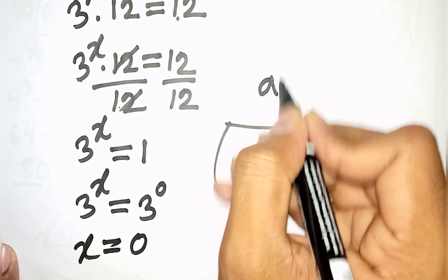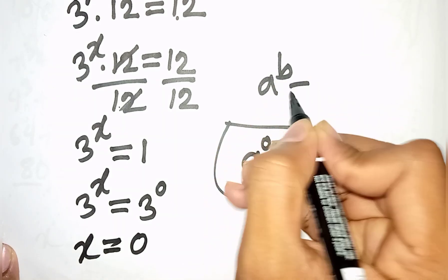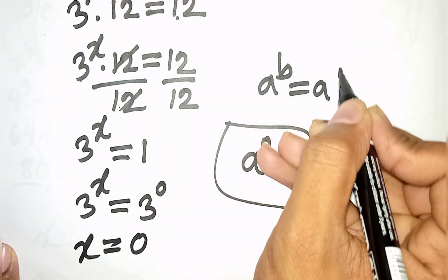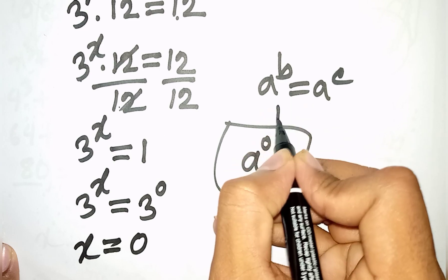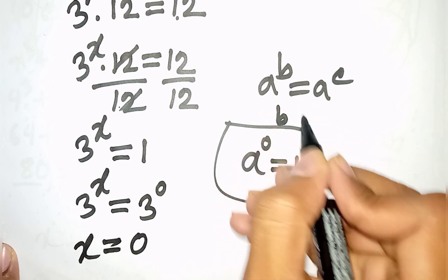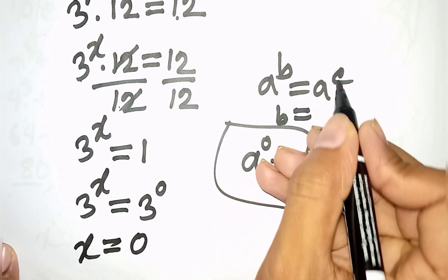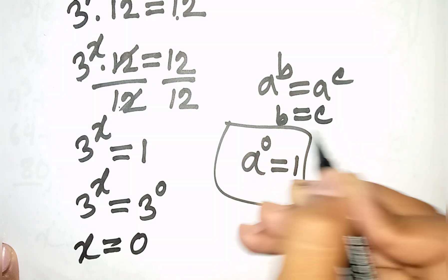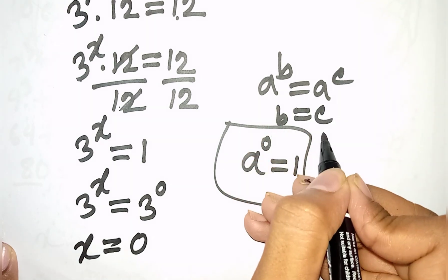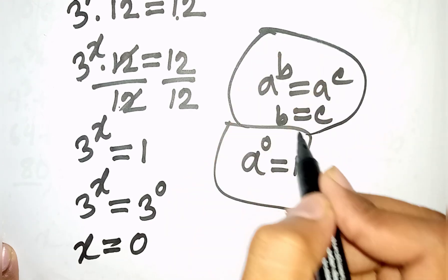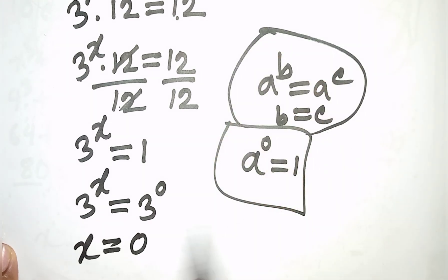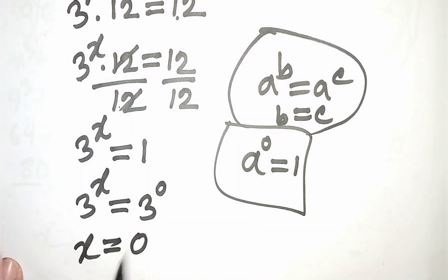According to the formula, if a power b is equal to a power c, then since a equals a, the bases cancel and power b equals power c, meaning b is equal to c. So according to this rule, x is equal to 0.